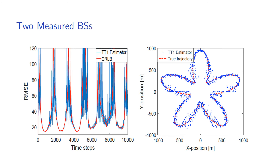This slide presents the RMSE and CRLB when two base stations are measured. As expected, it has less accuracy than the case with three base stations. Additionally, there are seven regions where the estimation error is much larger, above 100 meters. These points correspond to unfavorable geometry and might be mitigated with a tracking filter. Thus, a tracking filter has large potential to assist the snapshot estimate, and this is the subject of future work.